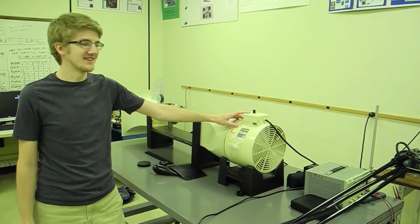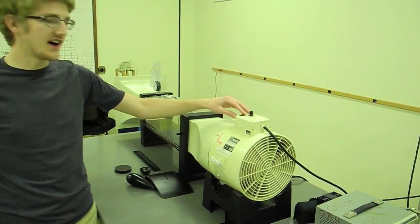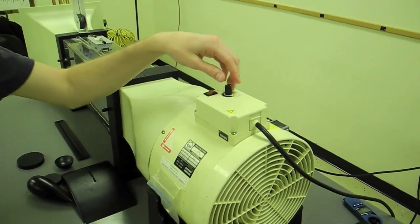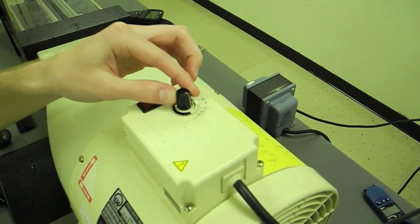On the right side here is the power switch. Turn this on to turn the wind tunnel on. And as you can see on this knob here, there are six different settings.